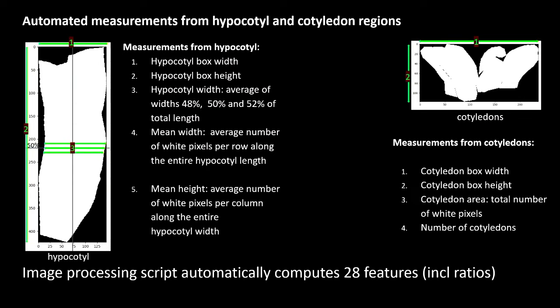We also produced a script to automatically measure a range of morphological features, like the hypocotyl on the left and features to do with the cotyledons on the right. We also computed ratios like total width to total length to put into a machine learning model.